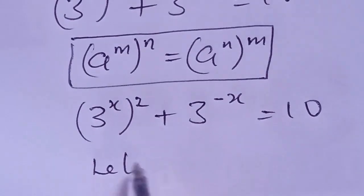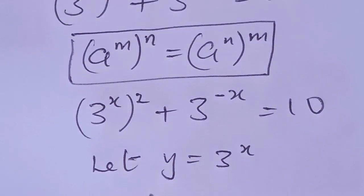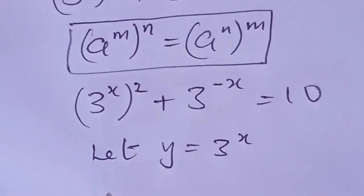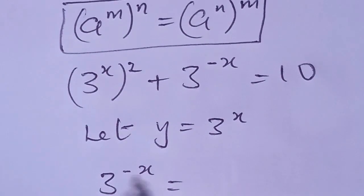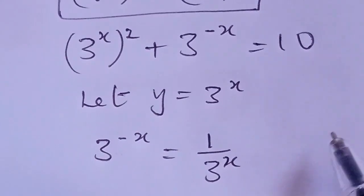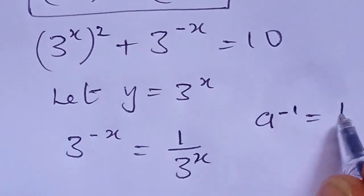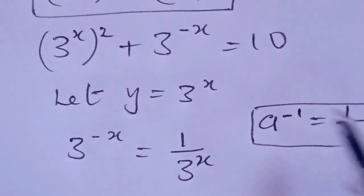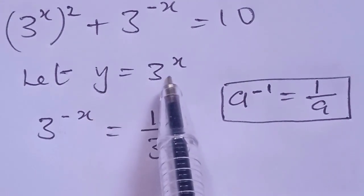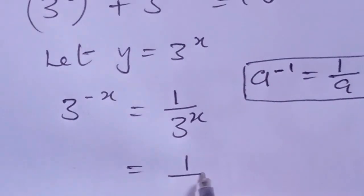We let y be equal to 3 to the power of x. That implies that 3 to the power of minus x can be expressed as 1 over 3 to the power of x, using the identity that a to the power of minus 1 equals 1 over a. Since y equals 3 to the power of x, then 3 to the power of minus x can now be written as 1 over y.